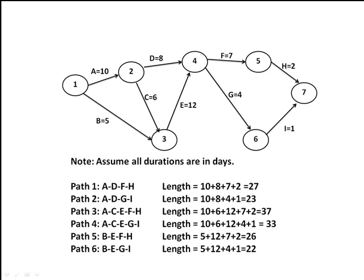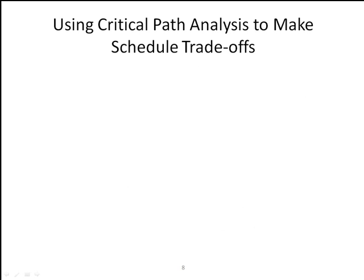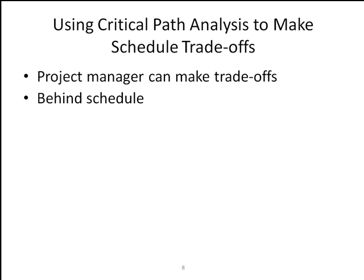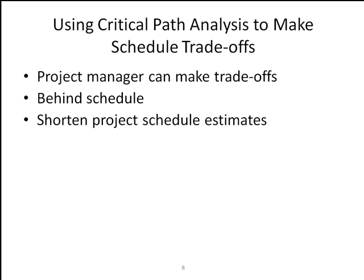So the critical path shows the shortest time in which a project can be completed, which is the longest path. If one or more of the activities on the critical path takes longer than planned, the whole project will slip unless the project manager takes corrective action. It is important to know the critical path throughout the life of the project so that the project manager can make tradeoffs. If one or more tasks is behind schedule, the schedule could be renegotiated with stakeholders, or more resources allocated to items on the critical path. It is also common for project stakeholders to want to shorten project schedule estimates, so you need to know the tasks on the critical path to allocate between dependencies.